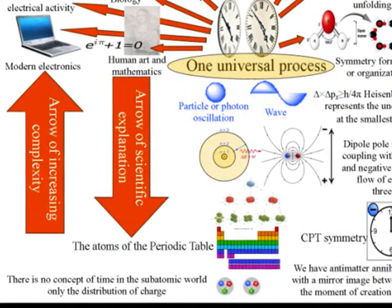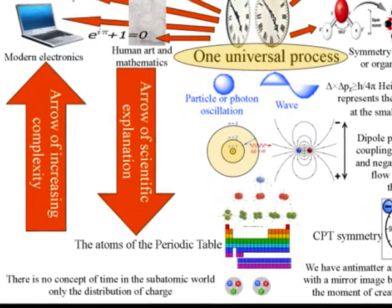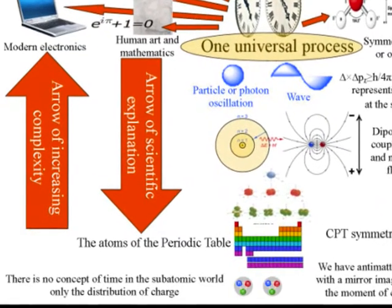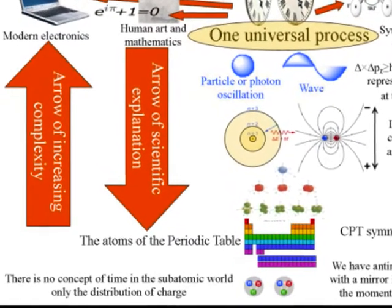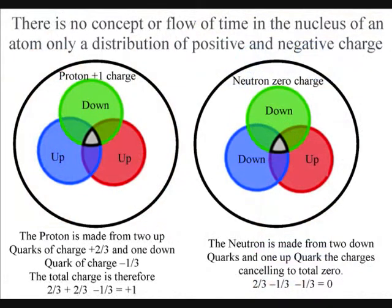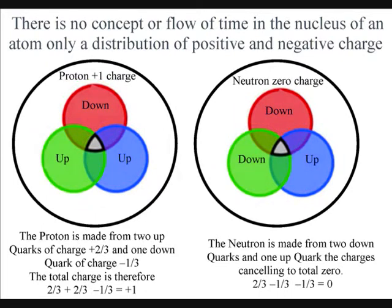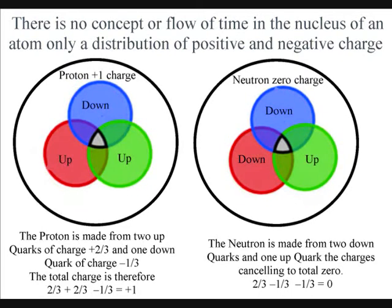If we start at the bottom of the diagram, we see that there is no flow or concept of time in the subatomic world within the atoms. All we have is the distribution of positive and negative charge within the atoms.